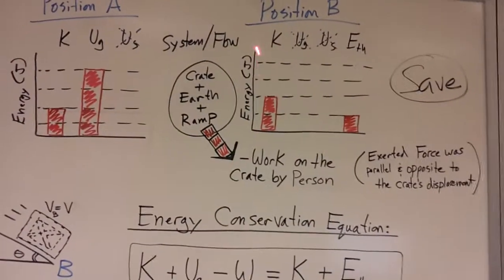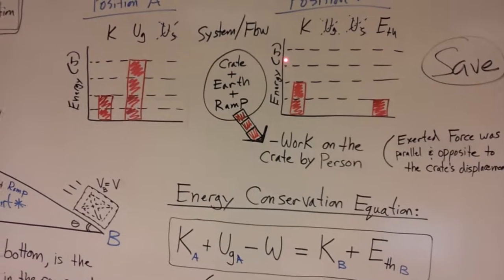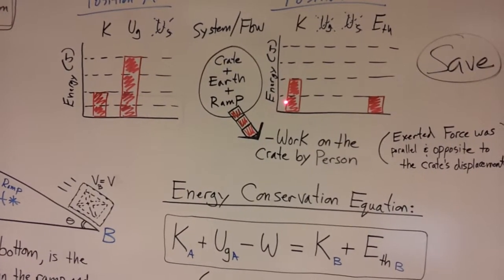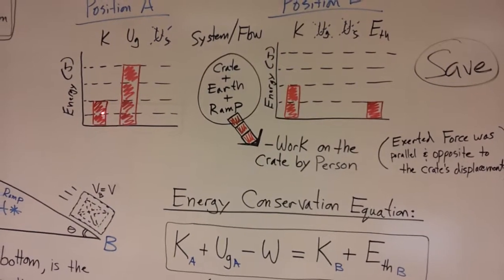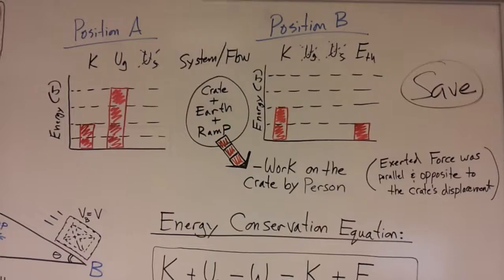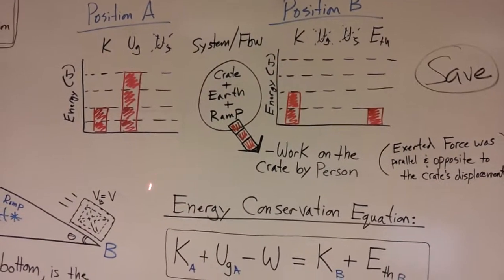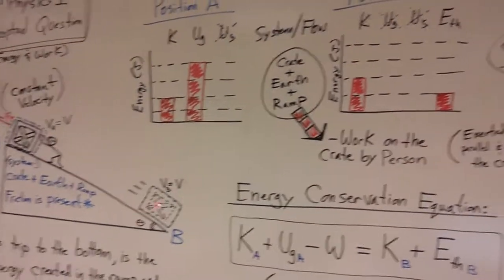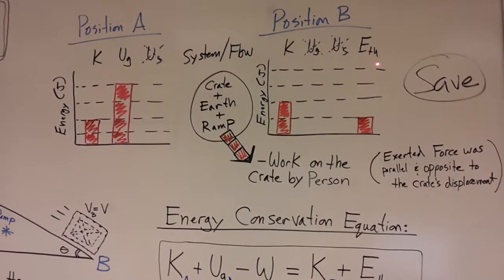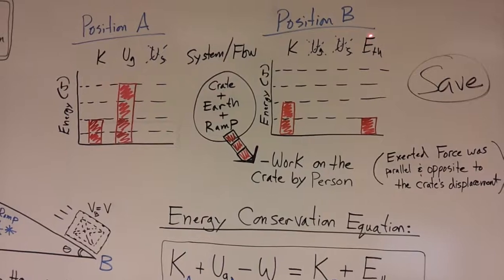In the very end, there is kinetic energy because it's still moving, and it's the same amount of kinetic energy in the end as there is in the beginning because it's the same mass crate, and it's moving at the same velocity. It has no gravitational potential energy because it's at a height of zero. There's no spring potential energy, but there's some thermal energy created because of friction.